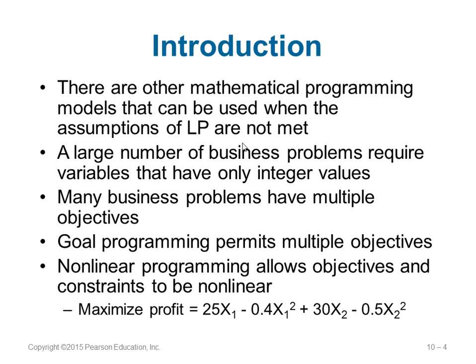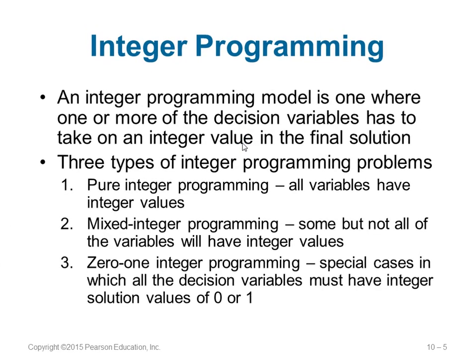A third scenario is where the objectives or constraints or both are non-linear in nature. Non-linear meaning something like 25x1 minus 0.4x1 squared — x1 squared is not linear, it is non-linear. Non-linear constraints or non-linear objective functions cannot be solved by linear programming. So let us start with the first one, which is called integer programming.